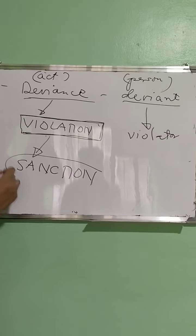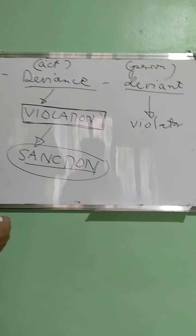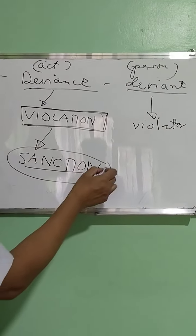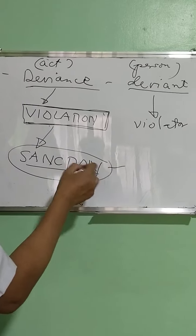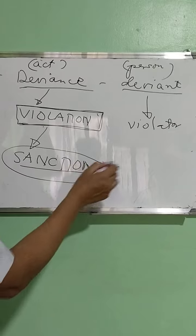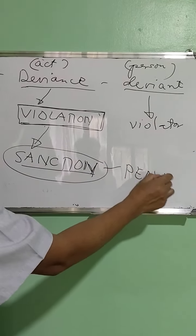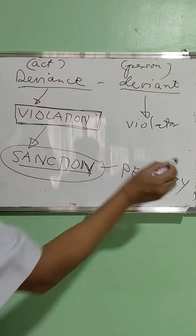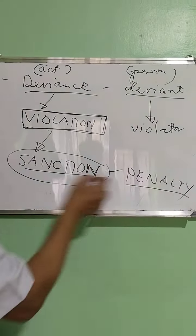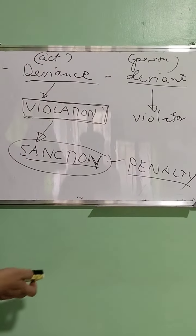If you have violated something, the consequence or outcome of that violation would be what we call a sanction or sanctions. Sanctions simply pertain to what we call the penalty. You have to be penalized for violating a social norm. So, a sanction is simply the penalty.